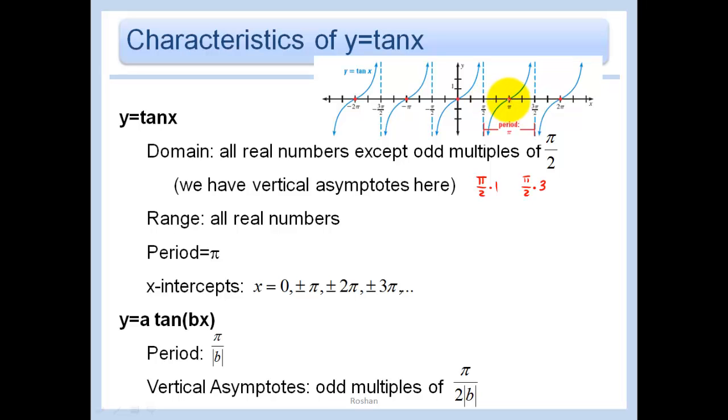Why do I say odd multiples? Well, because where did it jump? It jumped at pi over 2 times 1. And then it jumped again at pi over 2 times 3. It did not jump at pi, which is pi over 2 times 2. Then it jumps again at pi over 2 times 5, which is 5 pi over 2, and so forth. So it jumps at plus or minus the odd multiples of pi over 2. Do you have to memorize this? No. Just go ahead and draw it, and you'll see it come very, very clearly. The domain restriction is pretty much everywhere that we have that vertical asymptote.